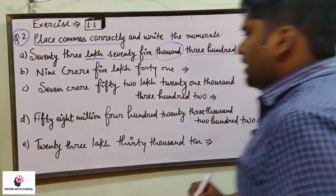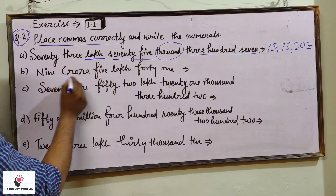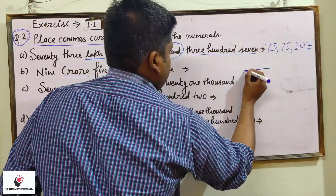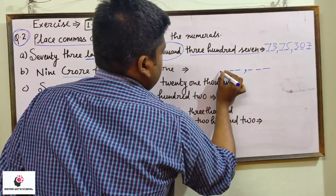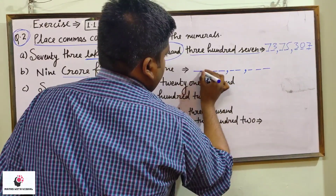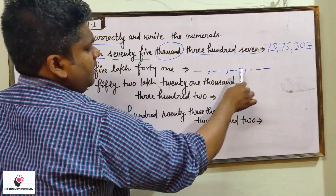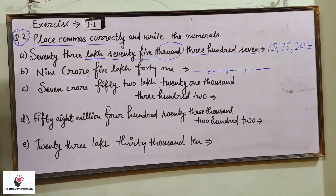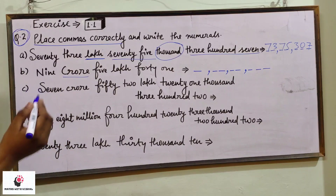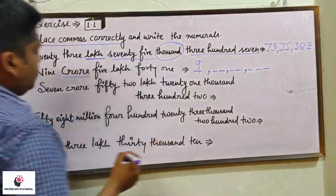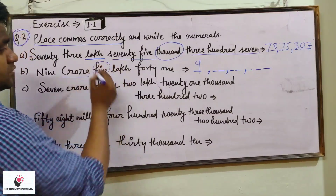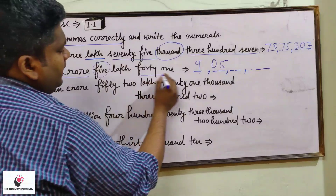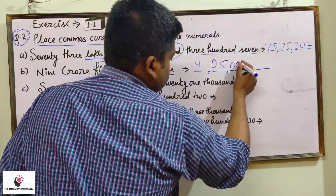Now let us move to the next number: nine crore five lakh forty-one. For this we have to move up to the crore place: ones, tens, hundreds, then comma, thousands, ten thousands, lakh, ten lakh, and crore. Nine crore — so in the crore place we write nine. Five lakh — so at the lakh place write five, then zero at ten lakh. Forty-one means no thousand, so zero zero thousand, and forty-one gives us zero four one.